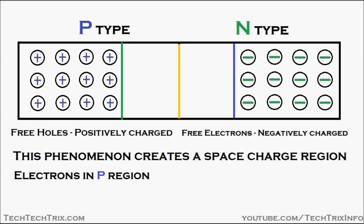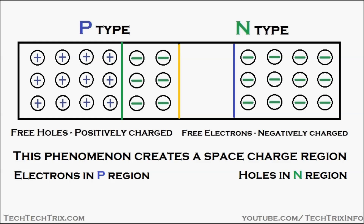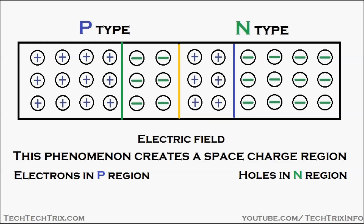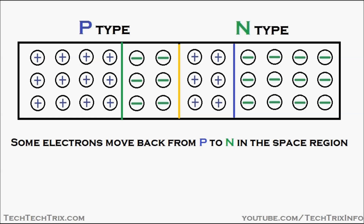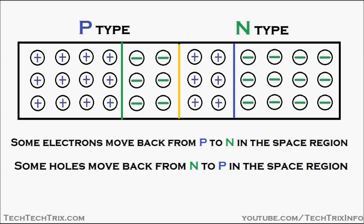Electrons are available in the P region at this space charge region, and holes are available in the N region at this space charge region. An electric field is also created in this space charge region due to the movement of these holes and electrons. The direction of the electric field is from the N-type region towards the P-type region. Some electrons move back from P to N, and some holes move back from N to P in this space charge region.